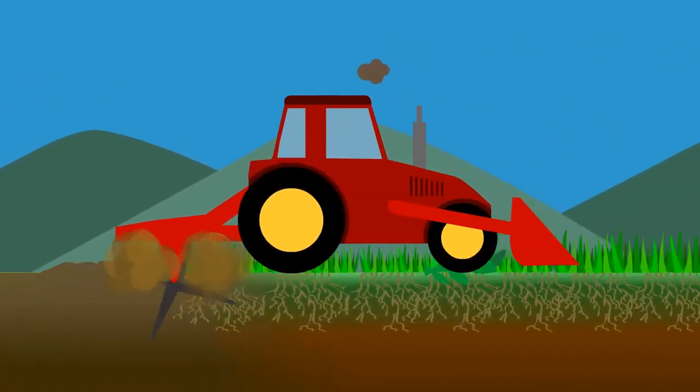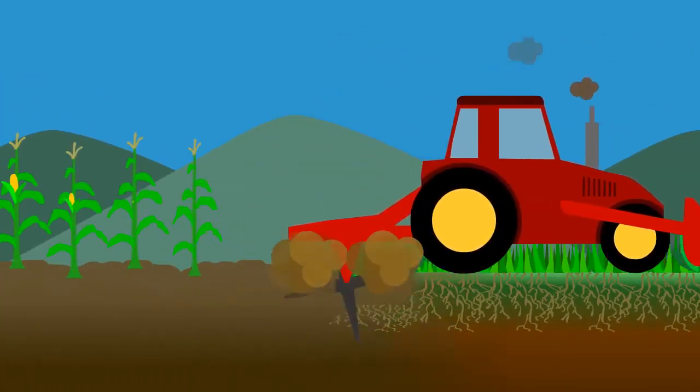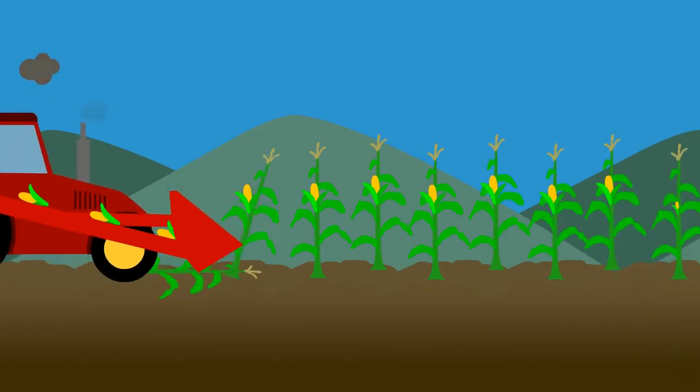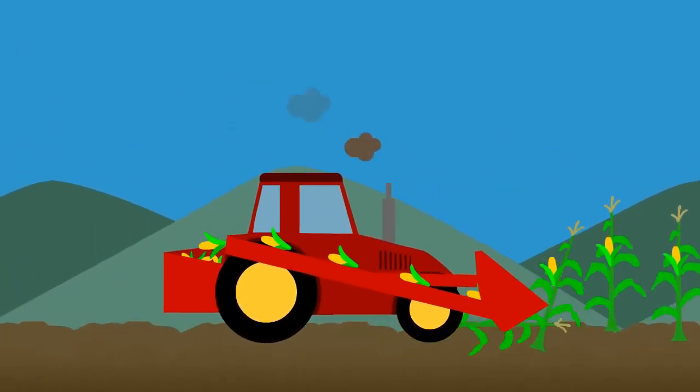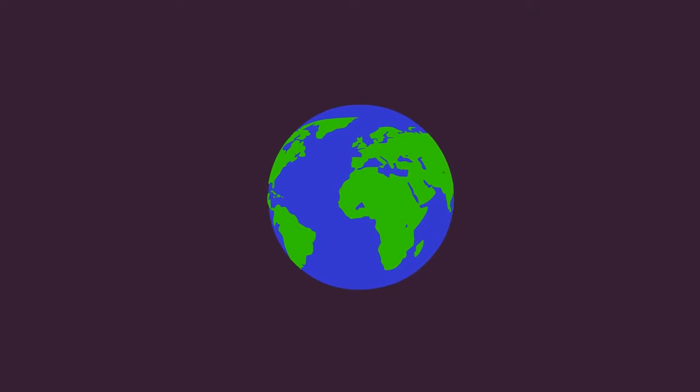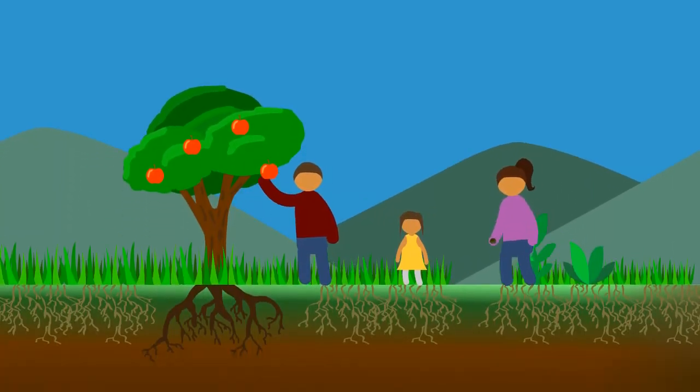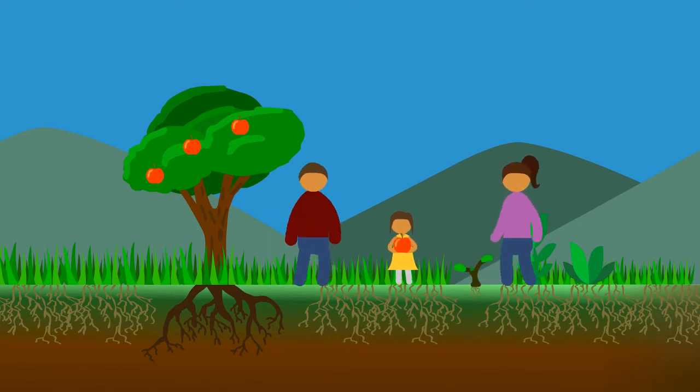That does not fit into an industrial model. The essence of industrialization is standardization. That's what makes it efficient. That's what allows a machine to do it. In order to have a truly regenerative agricultural system, we have to undo that way of thinking. And that's another reason why we would need more people in close relationship to the land.